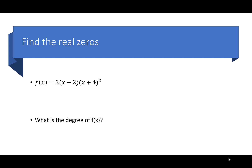Let's find the zeros of f(x) = 3(x − 2)(x + 4)². We take each factor and set it equal to 0. From x − 2 = 0, we get x = 2. From (x + 4)² = 0, we drop the exponent and get x + 4 = 0, so x = −4. So we have two zeros: x = 2 and x = −4.